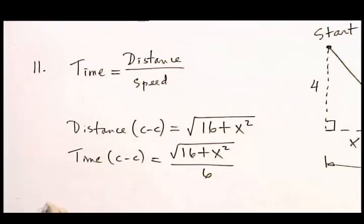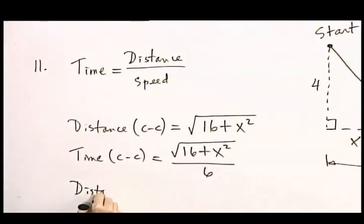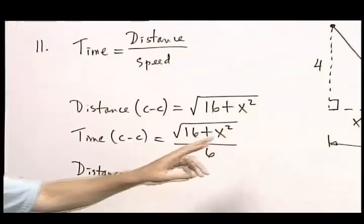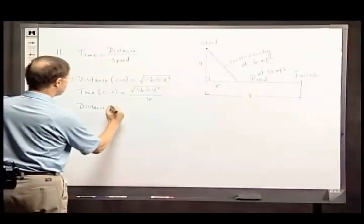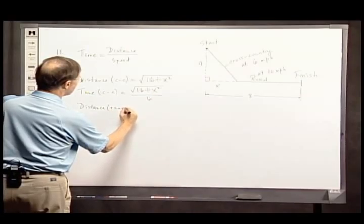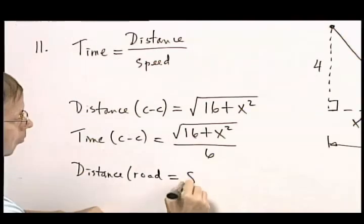Well, I've cut off some of this eight miles, so the distance on the road is eight minus x.